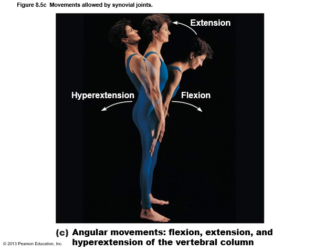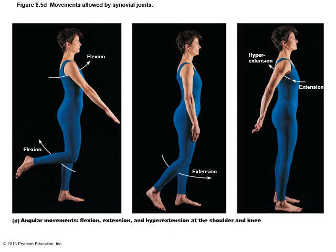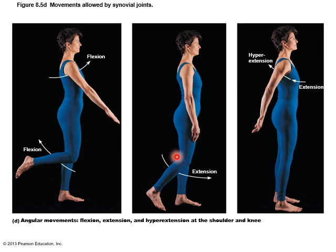Here are more angular movements: flexion, extension, and hyperextension of the vertebral column — you can see flexion like taking a bow, extension, and hyperextension. These movements also involve the shoulder and the knee. Flexion of the entire arm is bringing the arms forward at the shoulders, extension brings them back. At the knee, flexion — incidentally the only joint that flexes in the posterior direction — and extension brings the knee back to a straightened position.